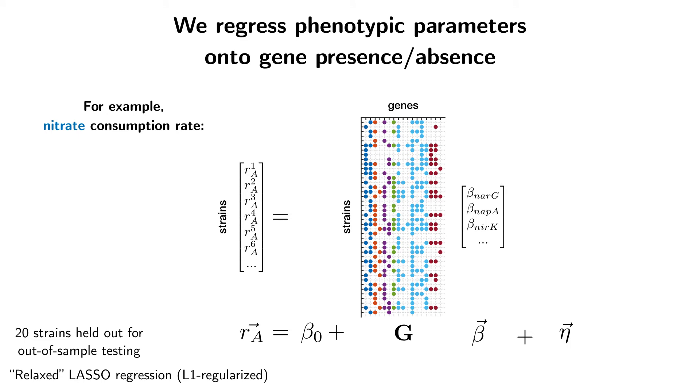We formulate the statistical problem in the following way. We perform a linear regression of each of these model phenotypic parameters onto the presence and absence of these denitrification related genes. Recall that one of the model parameters was this nitrate consumption rate, RA.